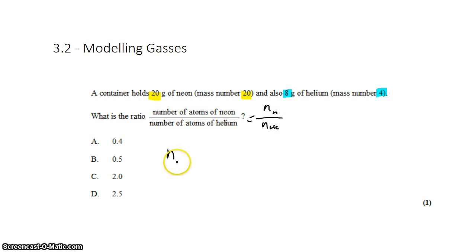If we want to know the number of atoms of neon, all we have to do is divide the total mass of the sample of neon by the mass of one atom of neon, which is 20.